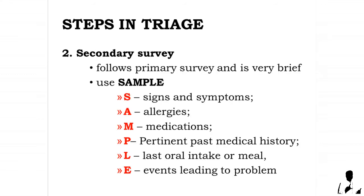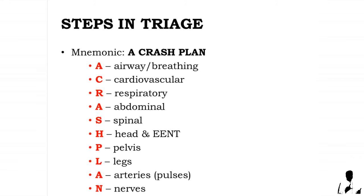The secondary survey follows the primary survey and is very brief. Use the mnemonic SAMPLE: S for Signs and Symptoms, A for Allergies, M for Medications, P for Pertinent past history, L for Last oral intake, and E for Events leading to the problem. After this, conduct a head-to-toe assessment using the mnemonic CRASH PLAN: C for Cardiovascular, R for Respiratory, A for Abdominal, S for Spinal, H for Head and Eyes, I for nose and throat, P for Pelvis, L for Legs, A for Arteries/Pulses, N for Nerves.